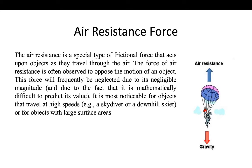The next one is air resistance force. Air resistance is a special type of frictional force that acts upon objects as they travel through the air. From the picture you can more clearly understand where the air is resisting. When a paratrooper is jumping, the parachute works only because of air resistance — the paratrooper is coming down due to gravity, and the air is pushing upward, helping to lift him a little.